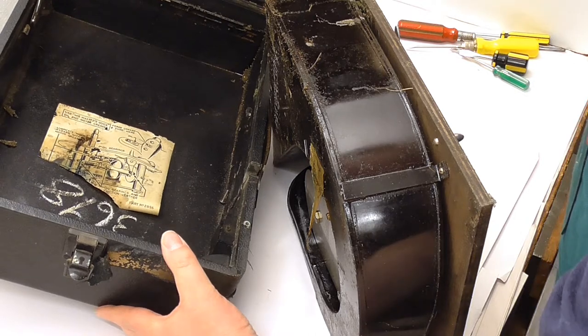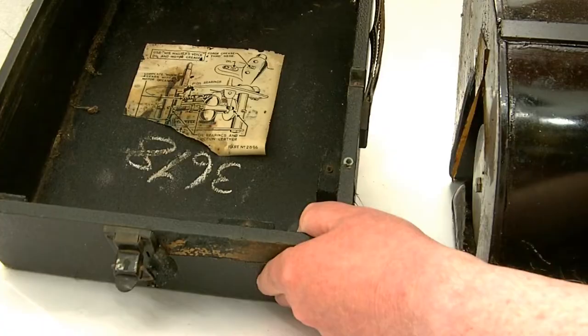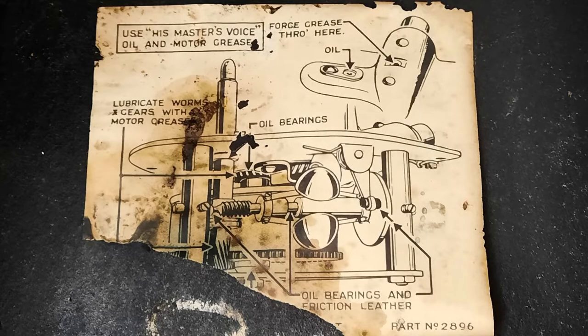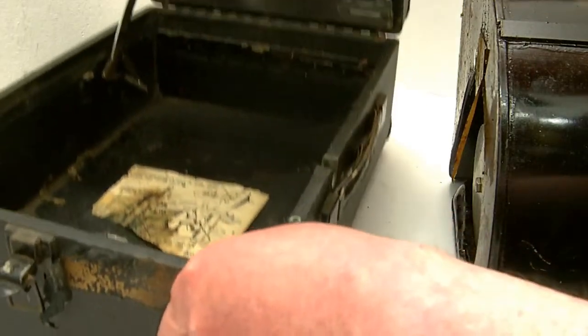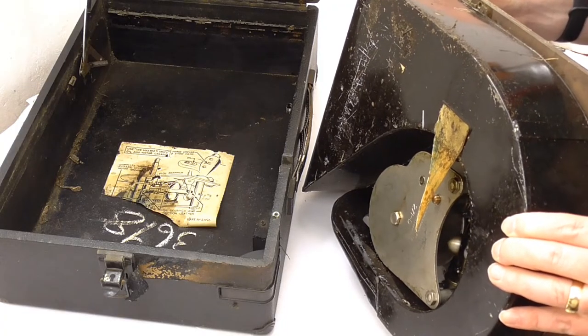Right, well I think that demonstrates that I know nothing about taking a 102 to pieces. Most of the paper diagram for oiling actually remains, which is interesting. A bit of it has actually attached itself to the bottom of the horn, so I might be able to sort that out.